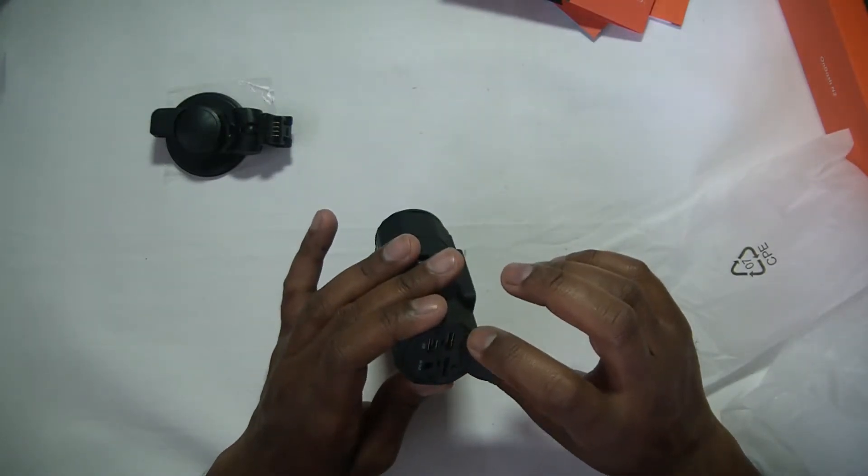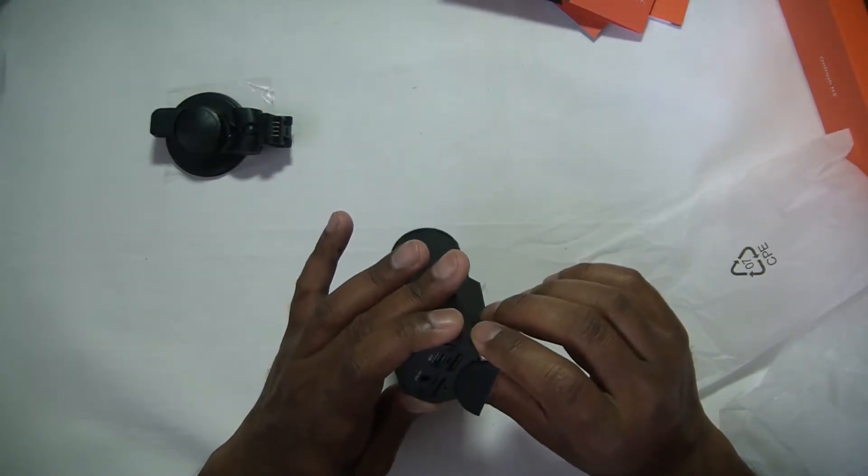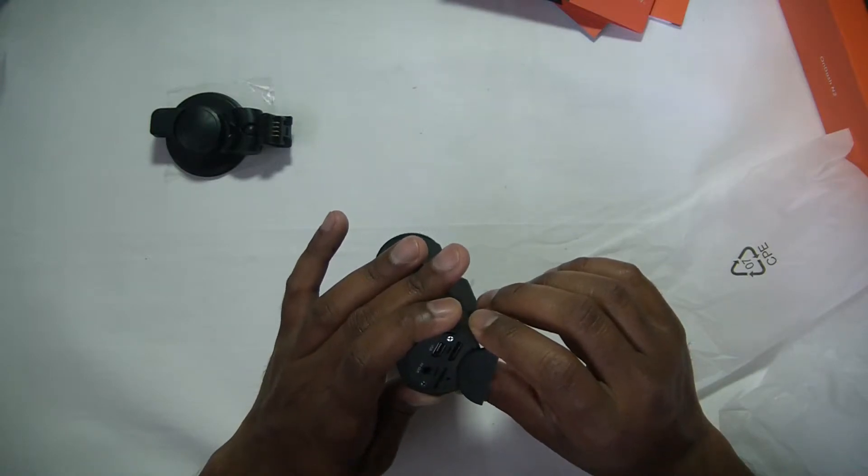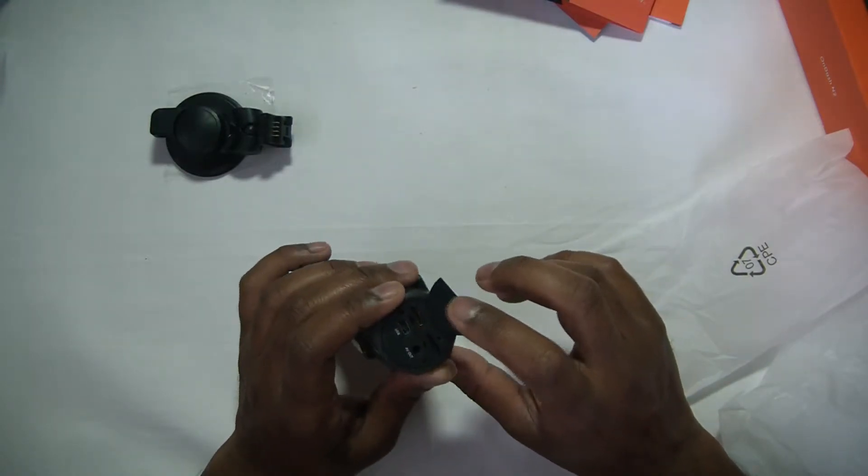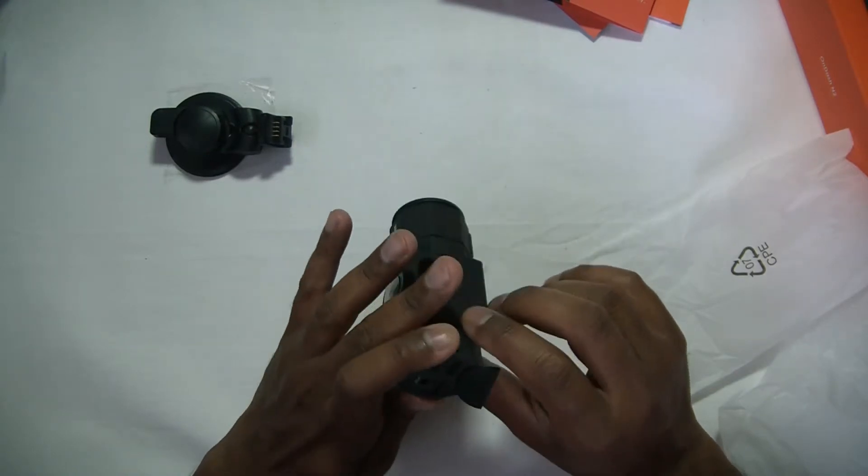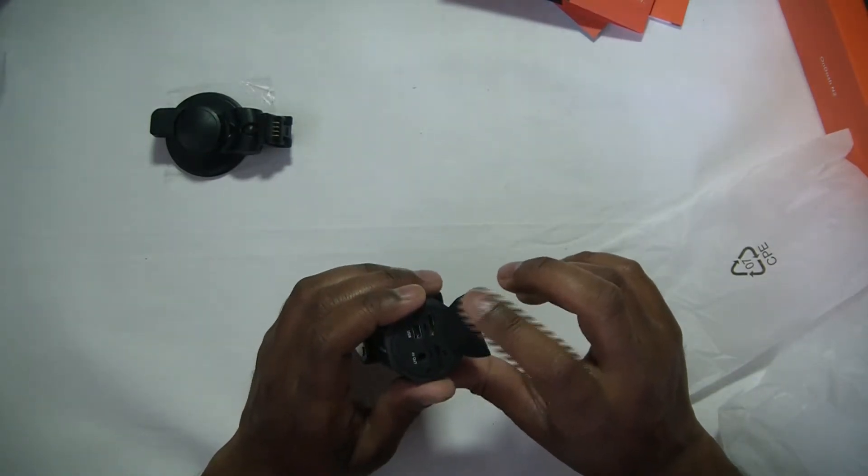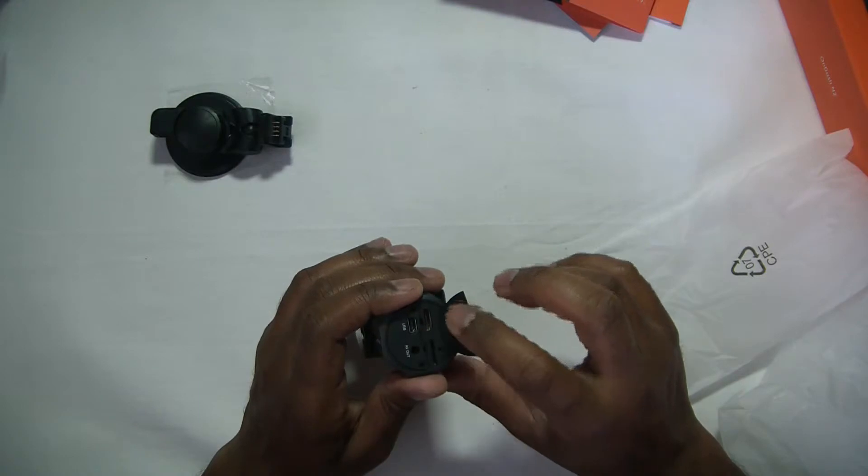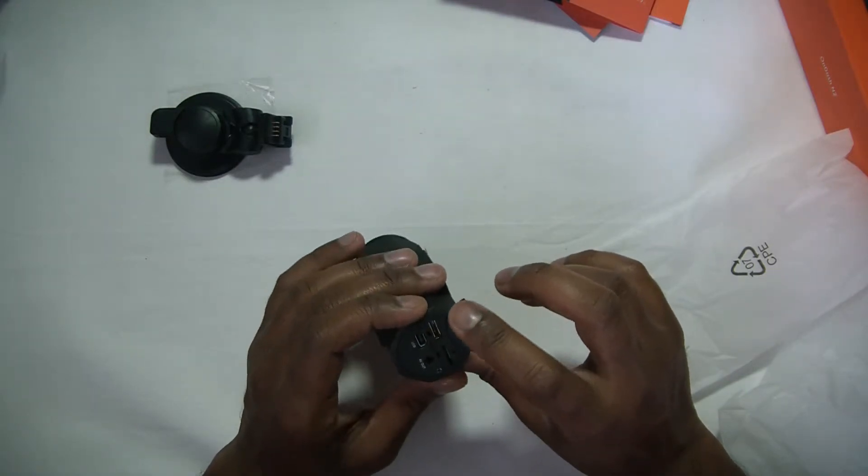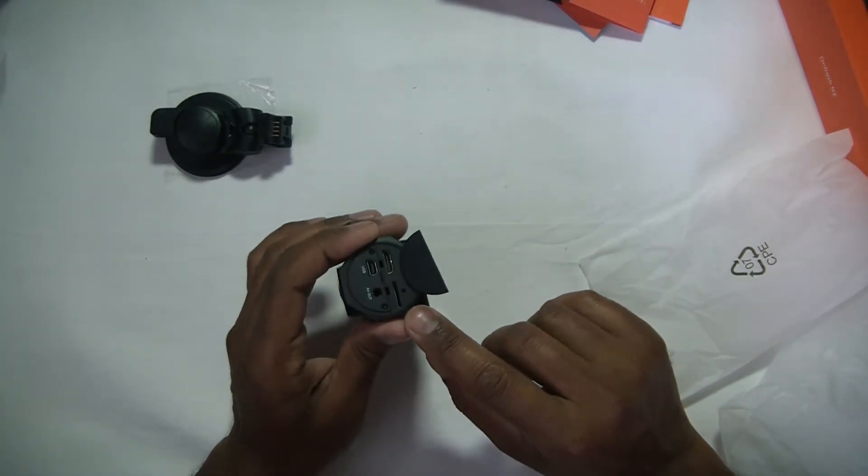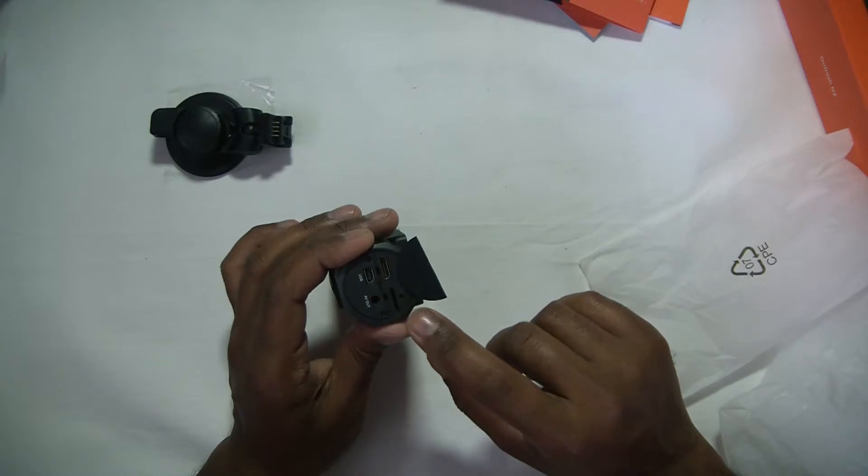So here we have an HDMI input. I believe this is a mini HDMI. I know there are multiple other types of HDMI, like micro, but I believe this is a mini HDMI, a little more wider. And here we have the micro SD card slot.